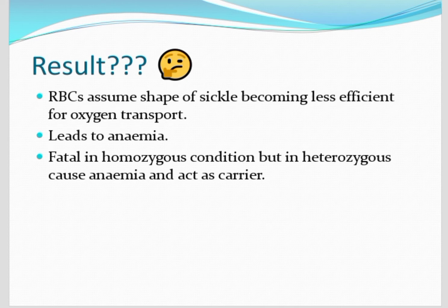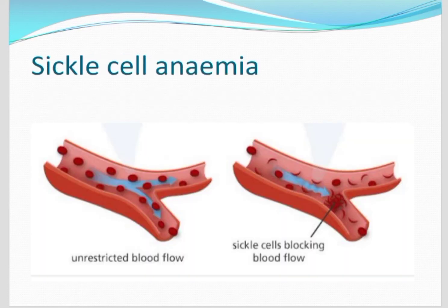Red blood cells assume the shape of a sickle, becoming less efficient for oxygen transport, so oxygen can't bind and oxygen transport will be less efficient, which leads to anemia. This condition is fatal in the homozygous condition, but in heterozygous it leads to anemia. Here you can see restricted blood flow takes place when sickle-shaped cells are present, blocking normal blood flow.